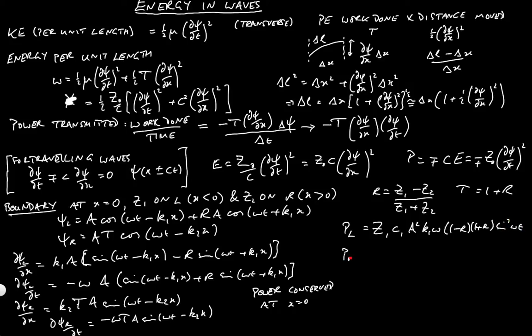And the power on the right is equal to z2 c2 a squared k2 omega into 1 plus r all squared. That's effectively t sine squared omega t.